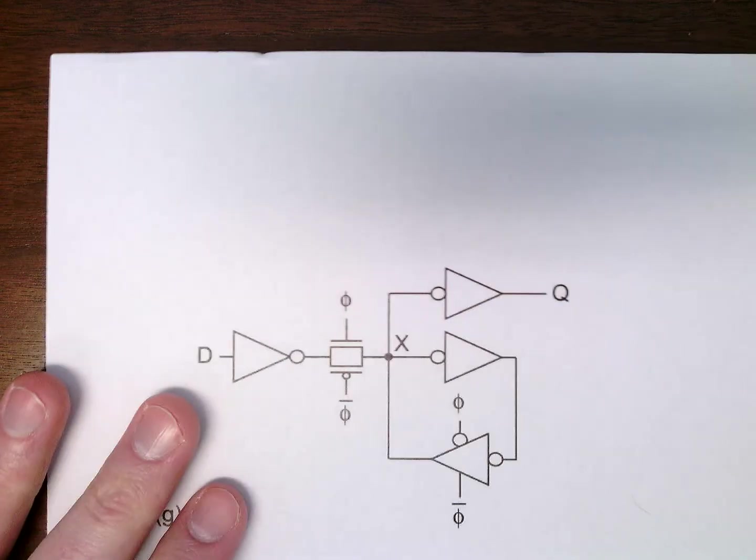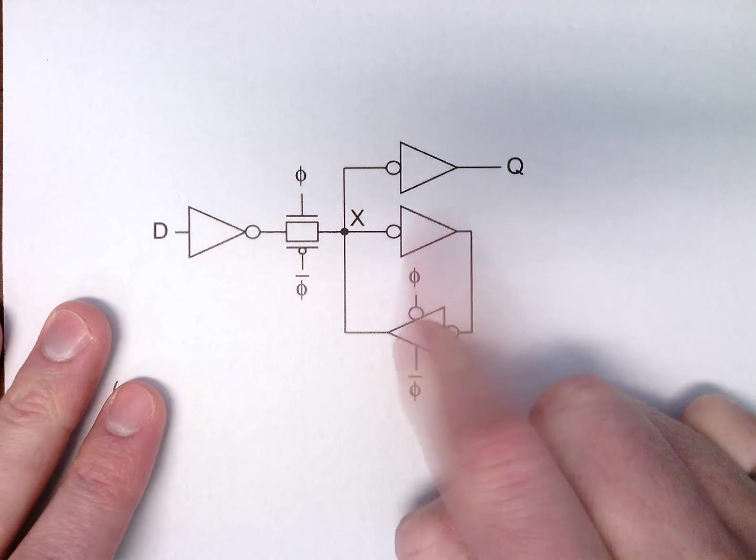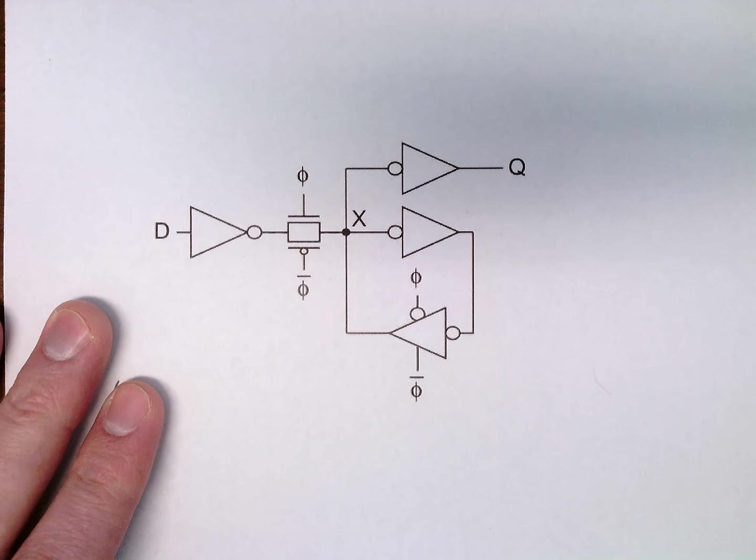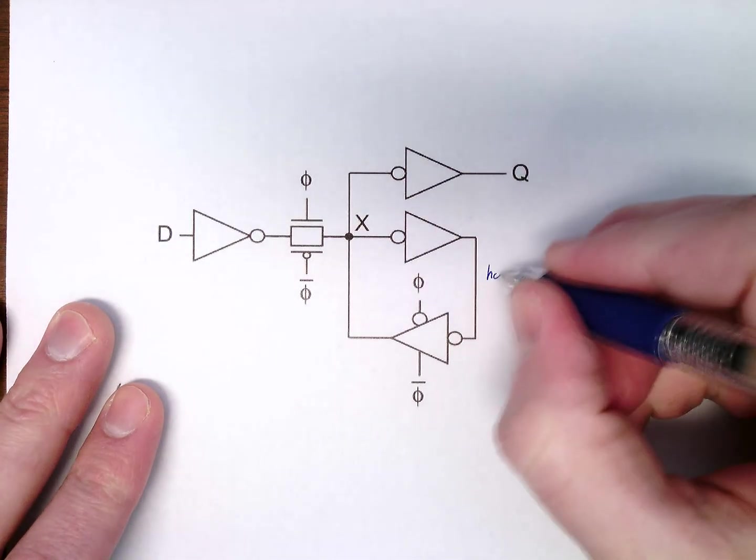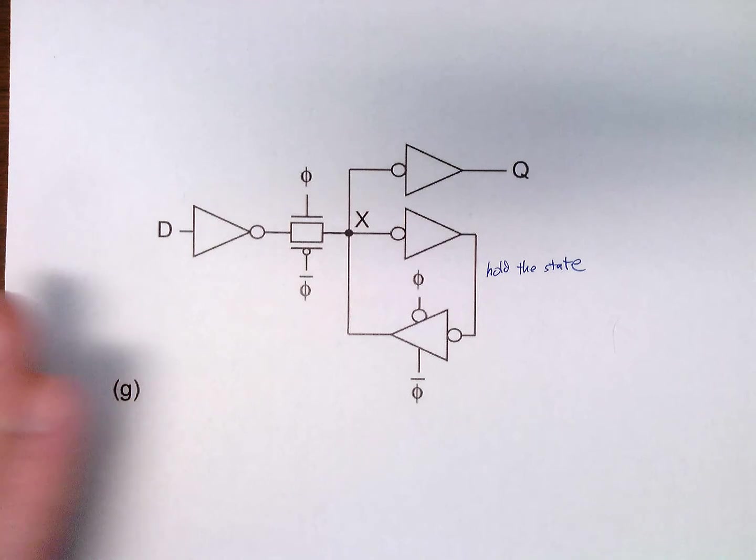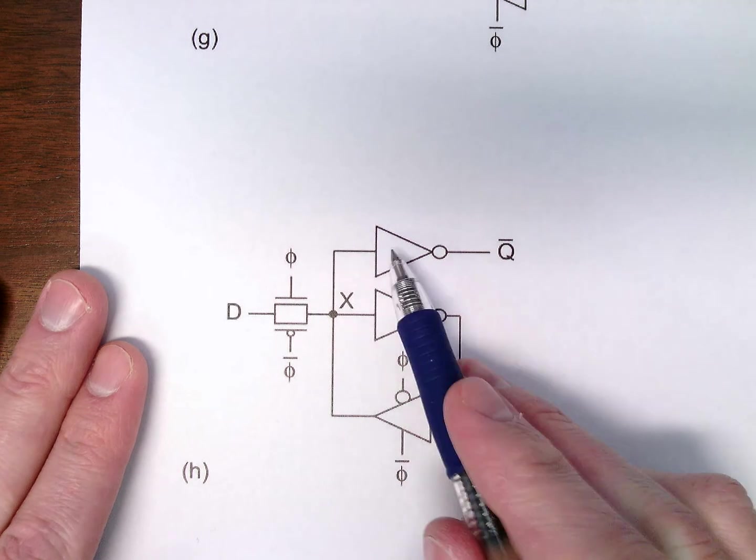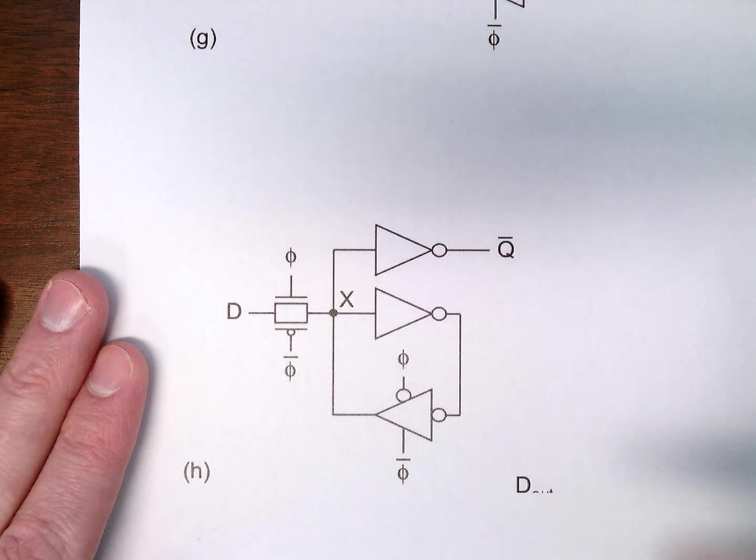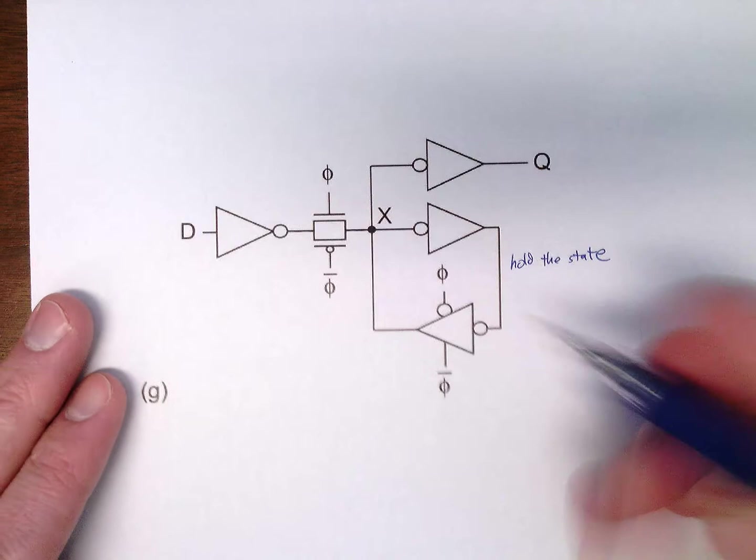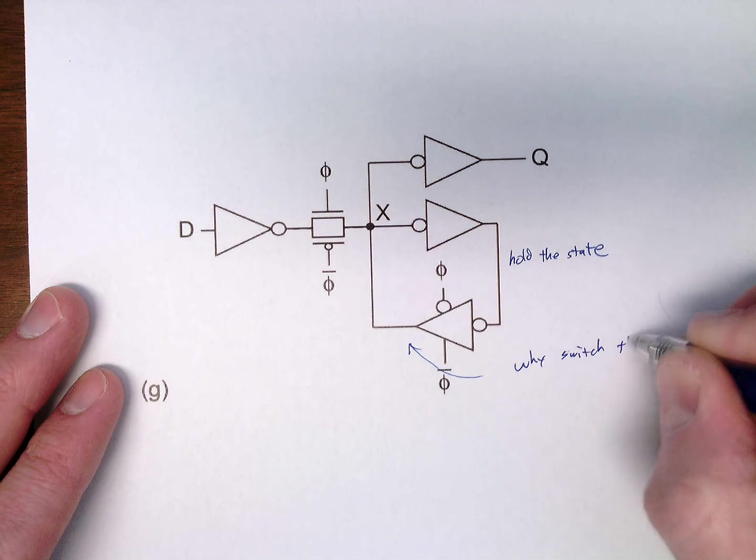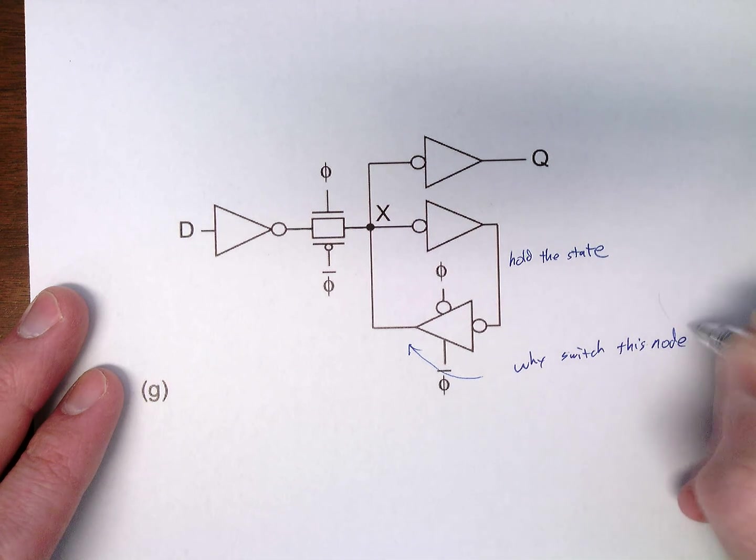All right. Last page. Okay. All we did is we took our tri-state buffer. We have this. We have picking this off for our actual output. This is just to hold. Hold the state. This one, not sure why I printed that, but that's about the same. Just doesn't, it has the bubbles in the normal ways, I guess, if we want. No, it's just missing the inverter here. All right, why, here's the thing. Why put a switch there?